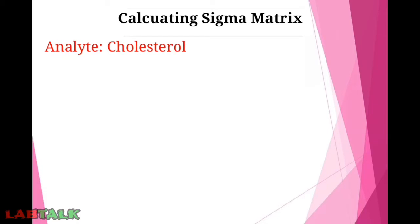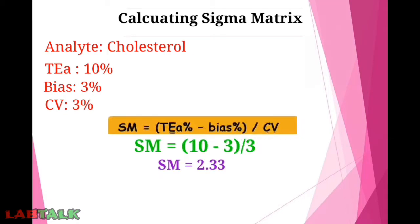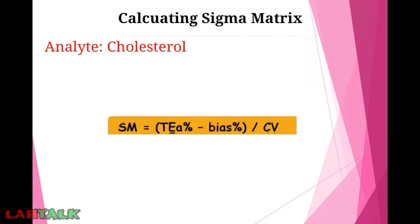The example analyte is cholesterol with a total allowable error of 10%, bias of 3%, and CV% of 3%. The sigma matrix will be calculated using the formula: total allowable error (%) minus bias (%) divided by CV%. Using this formula, sigma matrix = (10 − 3) / 3 = 2.33. So the sigma matrix for cholesterol is 2.33.